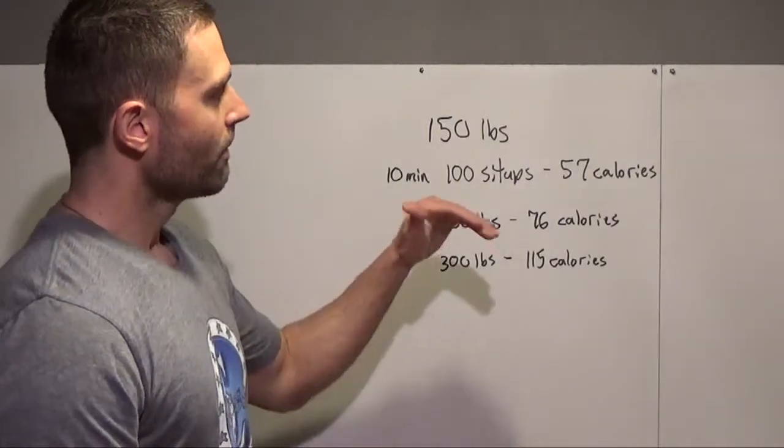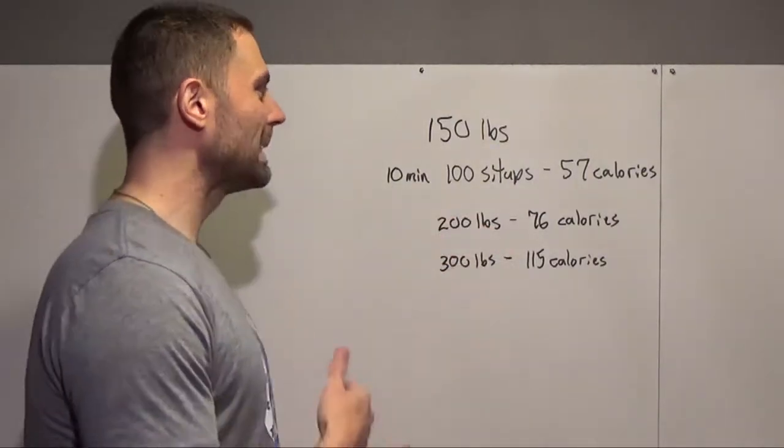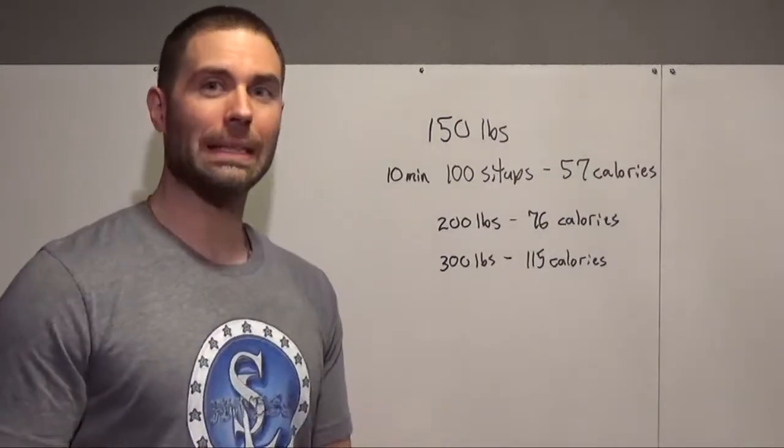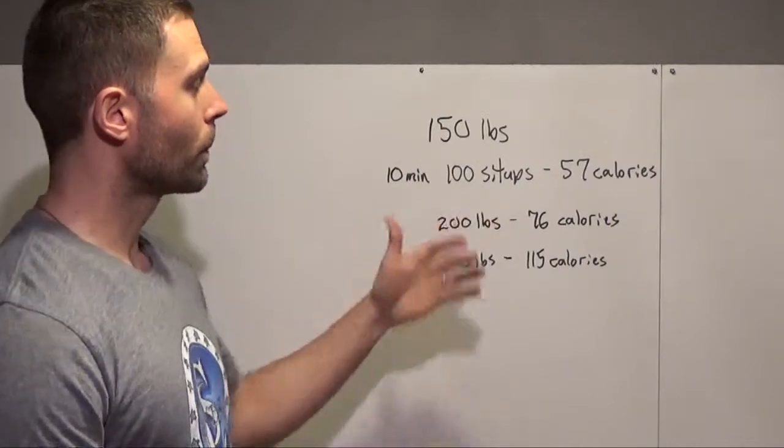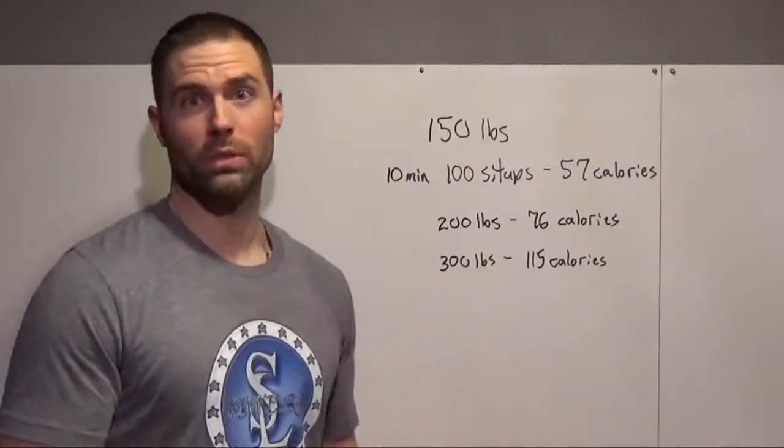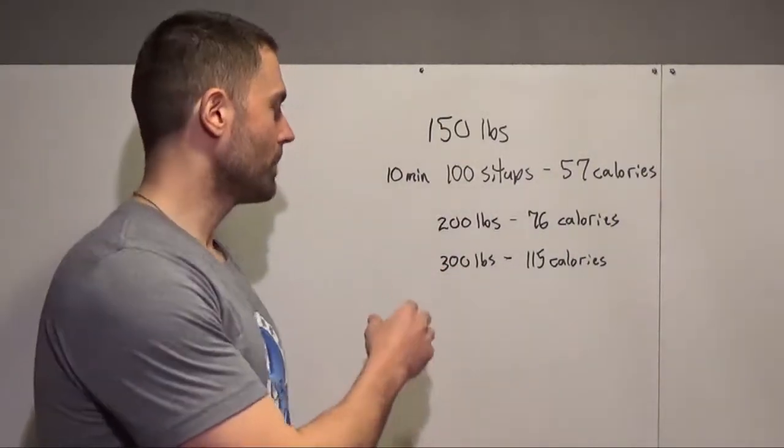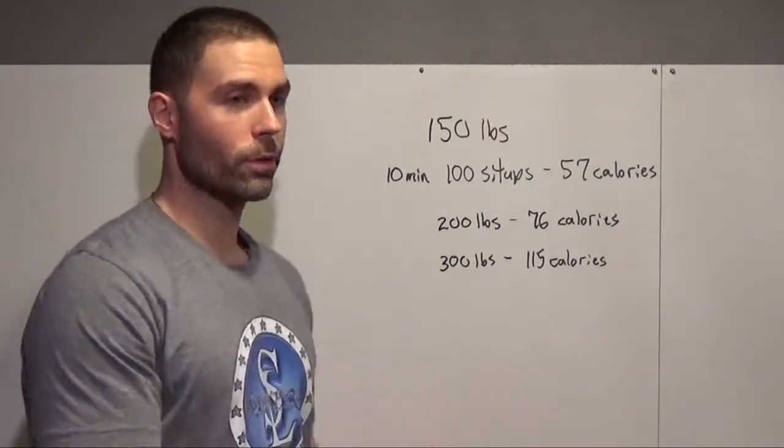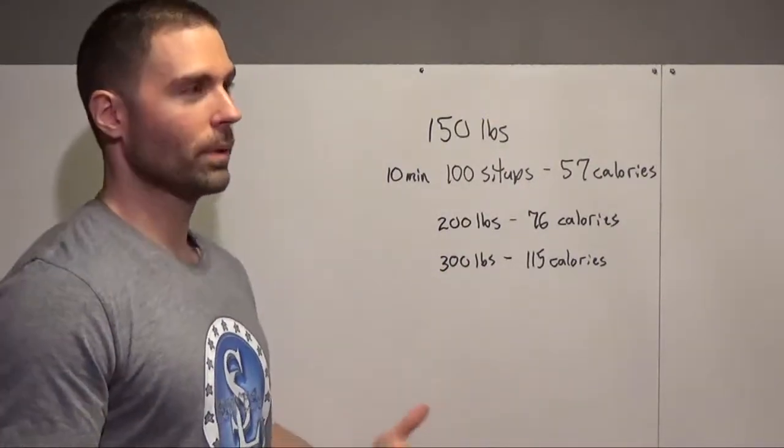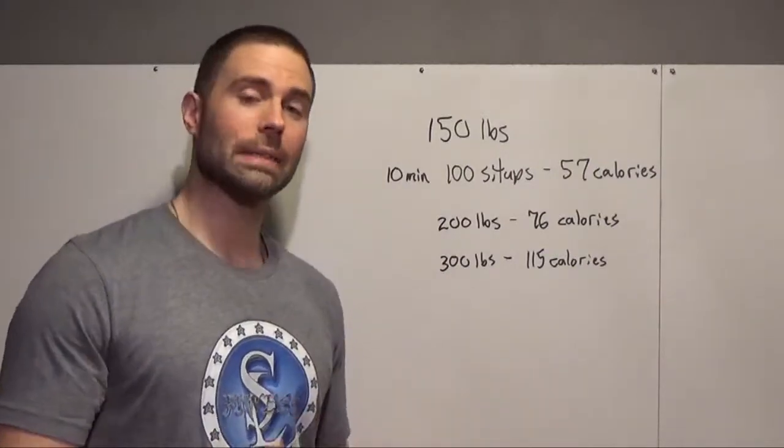So what we're going to look at is 57 calories for 10 minutes. So if you do a 30 minute workout you're only going to burn 150, we'll say 200 calories. That's at 150 pounds.